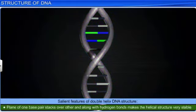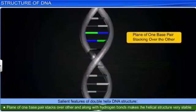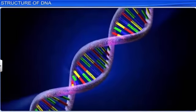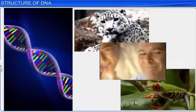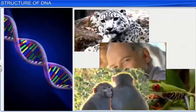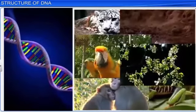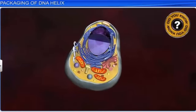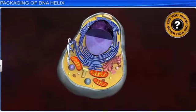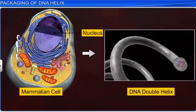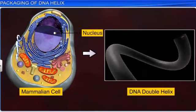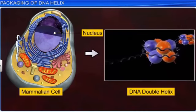Additionally, in a DNA double helix, the plane of one base pair stacks over the other, which along with the hydrogen bonds makes the helical structure very stable. The stable DNA helix structure allows it to be the genetic material that has instructions for the development and functioning of all known living organisms. The length of a DNA double helix in a typical mammalian cell is about 2.2 meters.